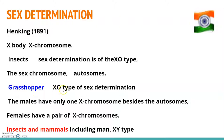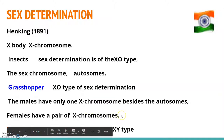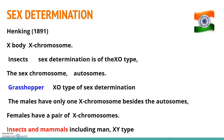In the grasshopper, which is an example of XO type sex determination, males have only one X chromosome besides the autosomes, whereas females have a pair of X chromosomes. These observations led to investigation of a number of species to understand the mechanism of sex determination.